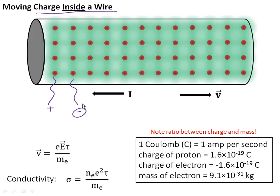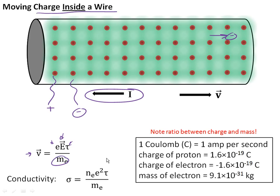These electrons are free to flow. If you put a force on them and the electrons move in one direction, since they're negatively charged, we're essentially going to get a current in the opposite direction. There's a difference between the velocity vector of the electrons and the way we define current. We can calculate velocity by the electric field applied times the charge of the electron, the time between collisions, and the mass of the electron. We used this in the last lecture to calculate conductivity, which is a property of the material.